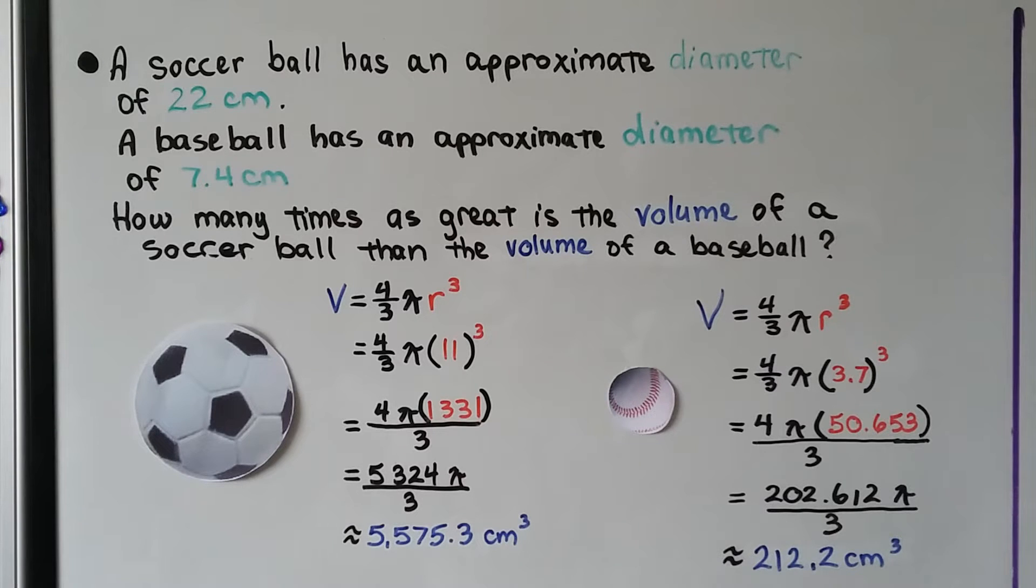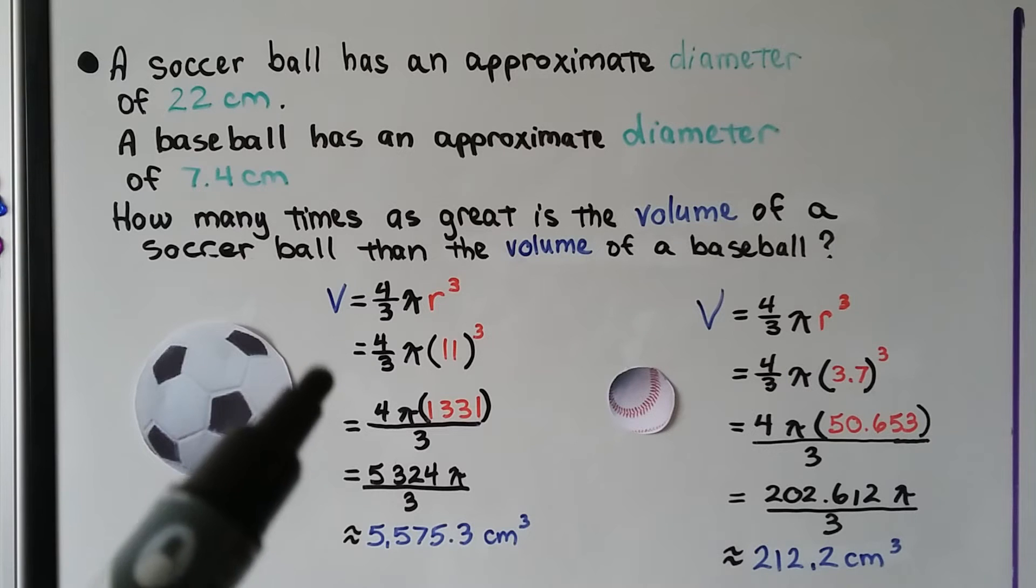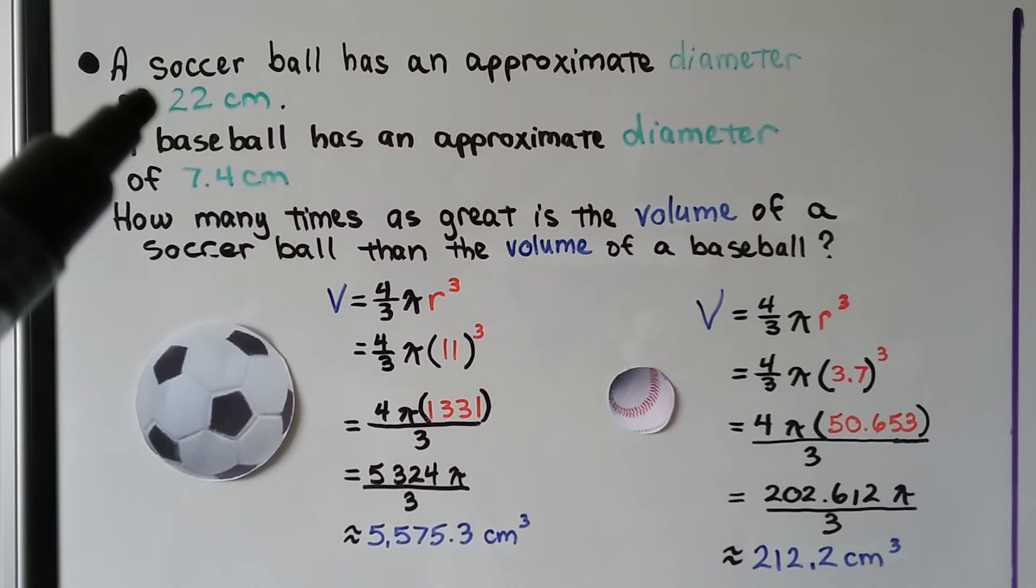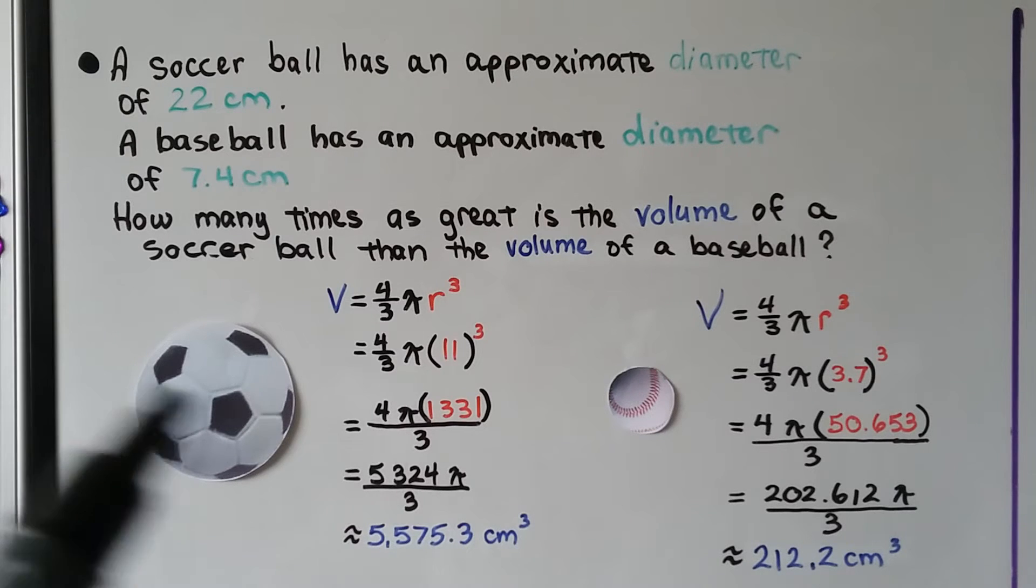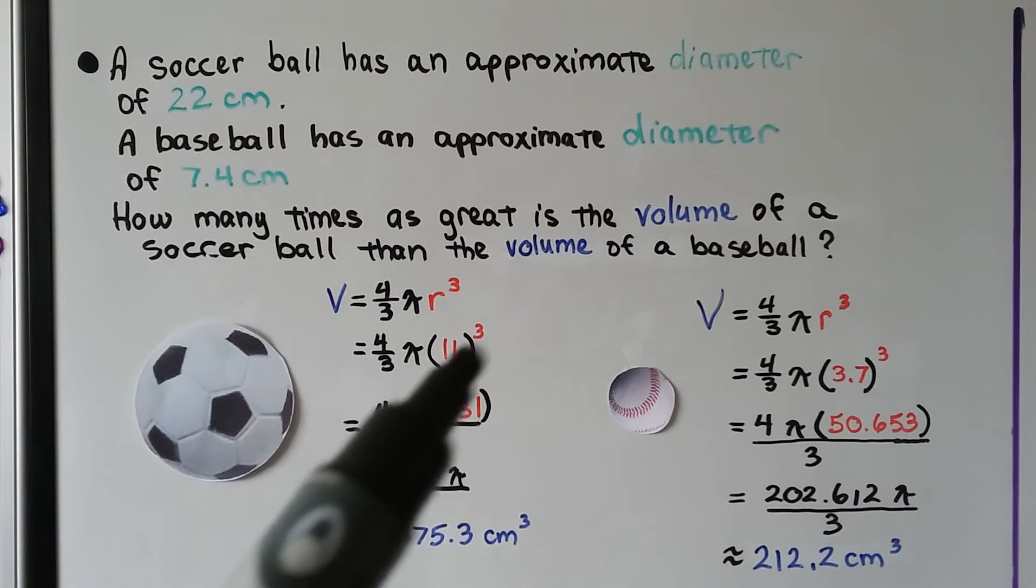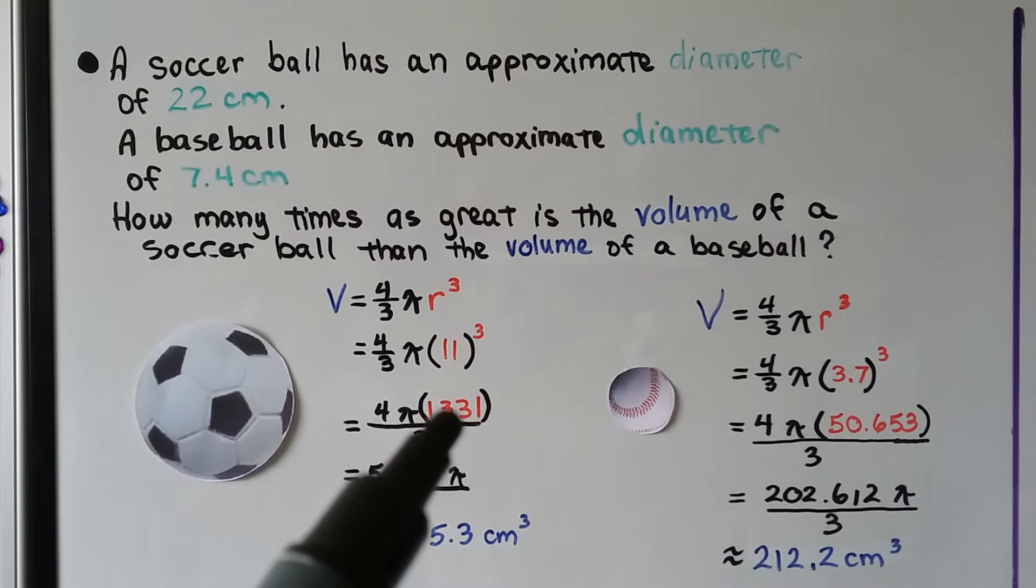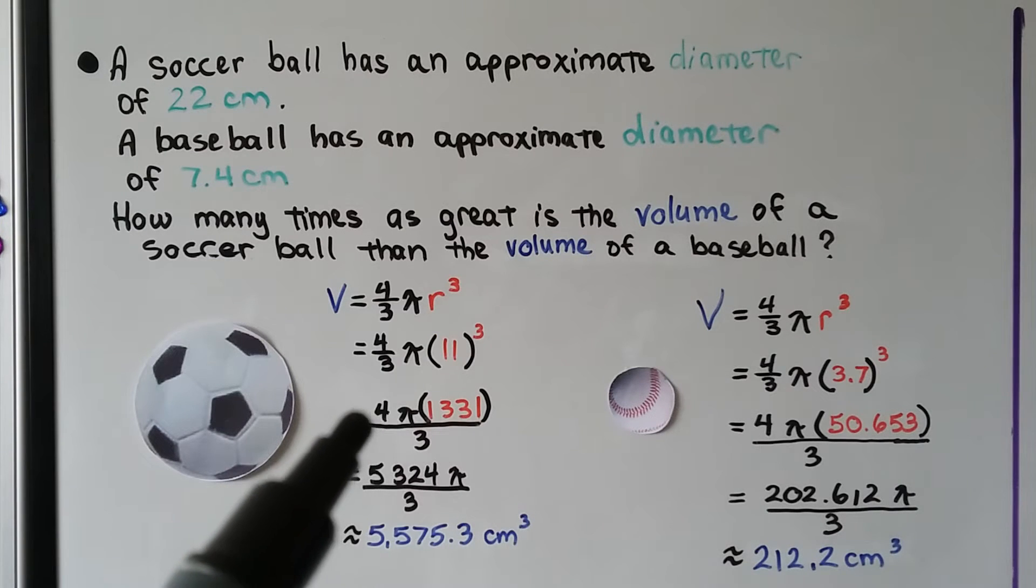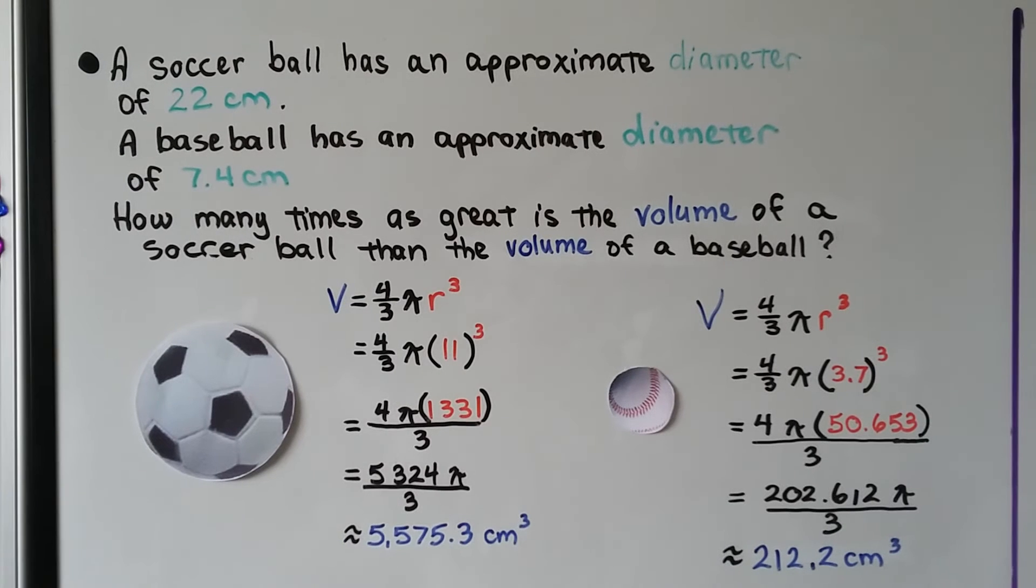So let's find the volume of each. Using our formula, we put in our radius. If that's got a diameter of 22 centimeters and a radius is half the diameter, then we're going to have half of 22, which is an 11. We do the 11 cubed and get 1,331. We can write the whole thing as 4 pi times 1,331 over the 3. That's going to give us 5,324 pi over 3.